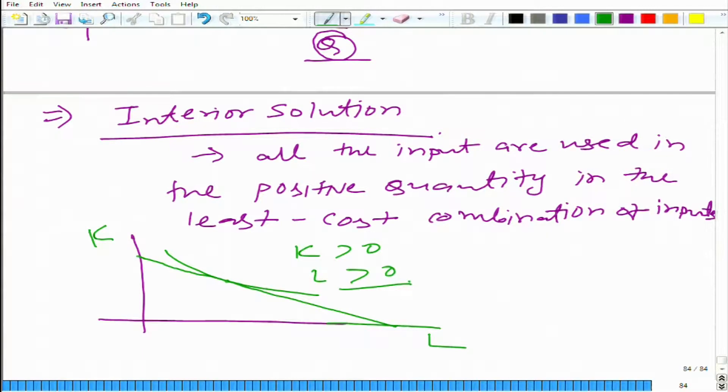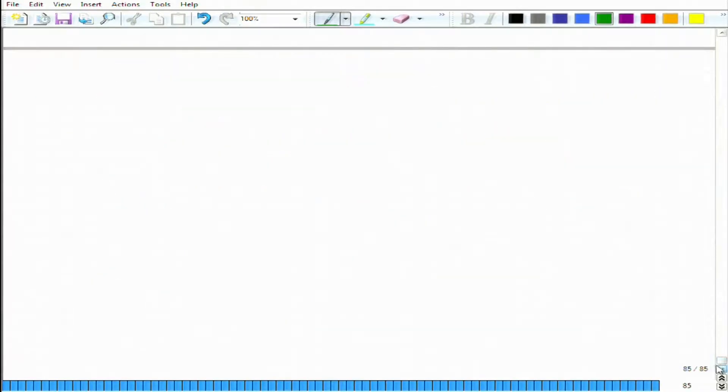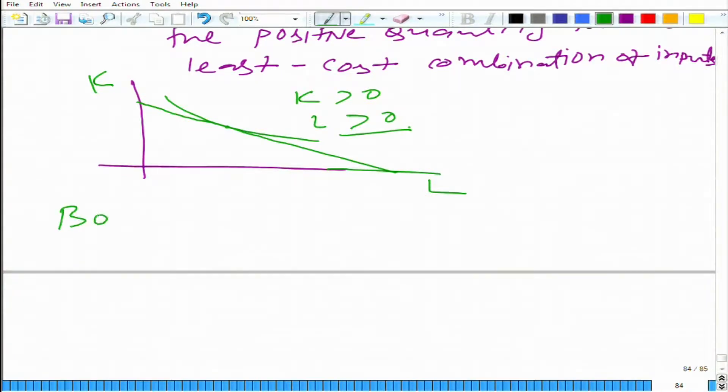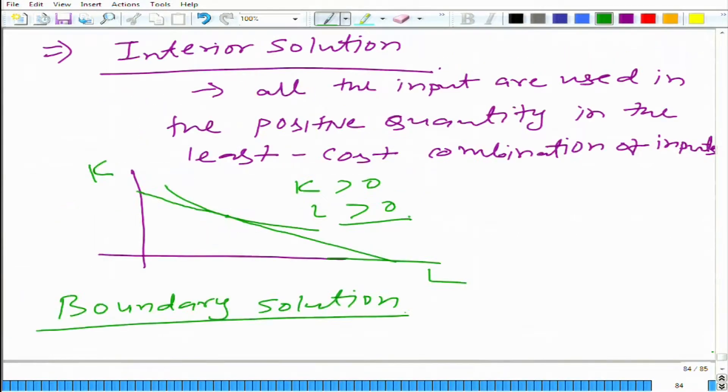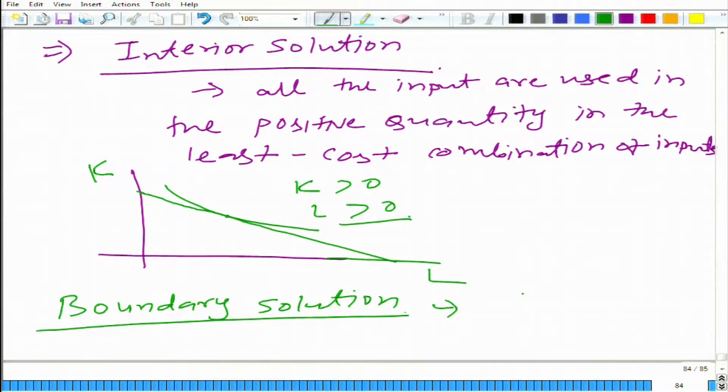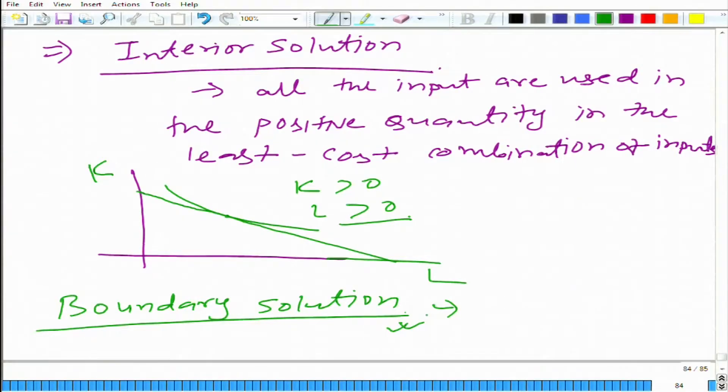As opposed to interior solution, what we have is something called boundary solution. What do we mean by boundary solution? That at least there is one input which is not used in the least cost combination of inputs to produce q0 amount of output. At least we are not using one input, then we get boundary solution. For example, when we took a production technology where both inputs were perfect substitutes of one another, we got the boundary solution - at least cost combination, only one of these two inputs was used.